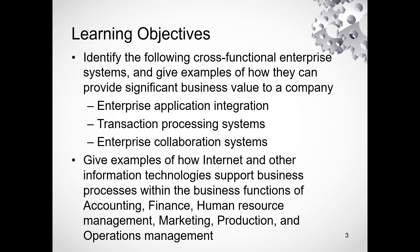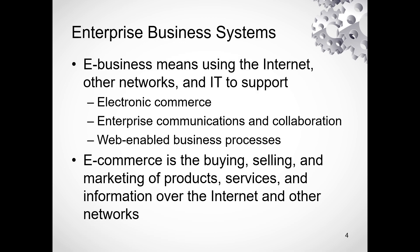A business organization has multiple functional departments: accounting, finance, human resource management, marketing, production, and operation management. We will give examples of how the internet and other information technology support these functional activities through enterprise business systems.